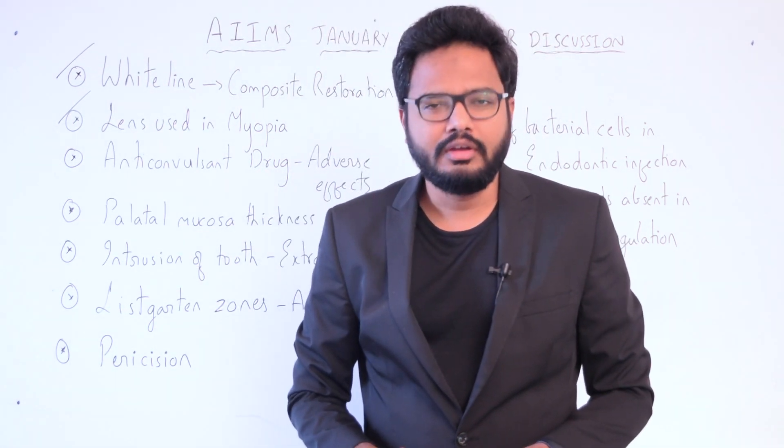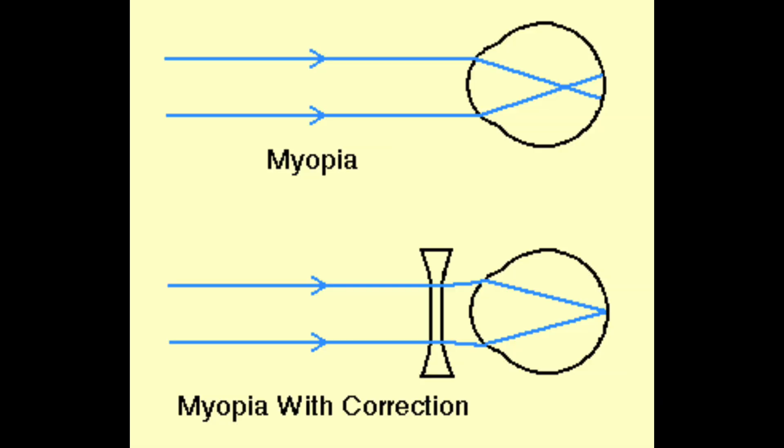What lens is used in case of myopia? Myopia, also called short-sightedness, means a myopic person has clear vision for close objects but distant objects appear blurred. This is because light is focused in front of the retina. Short-sightedness is corrected using a concave lens, placed in front of the eye, moving the image back to the retina and making it clearer.